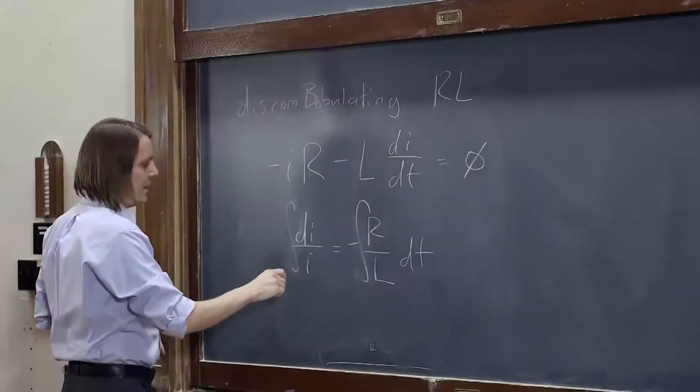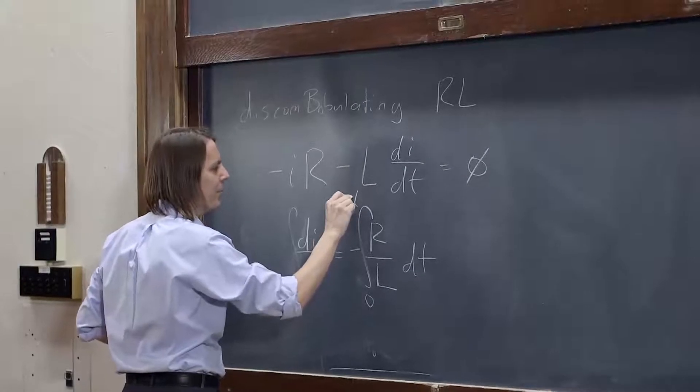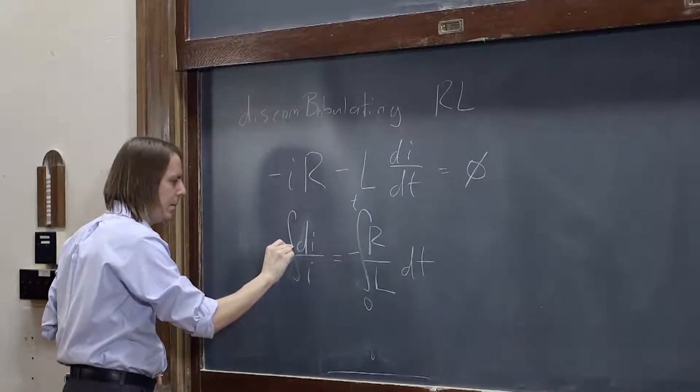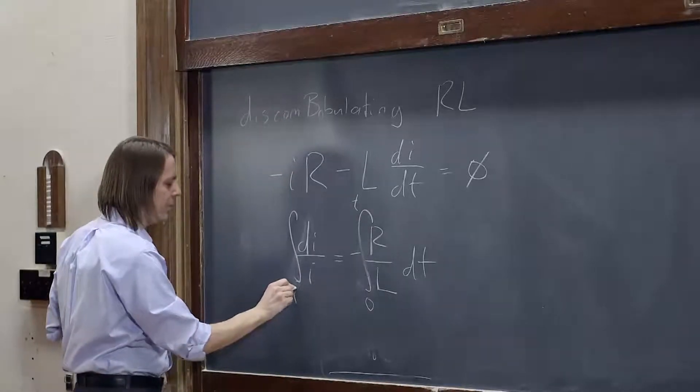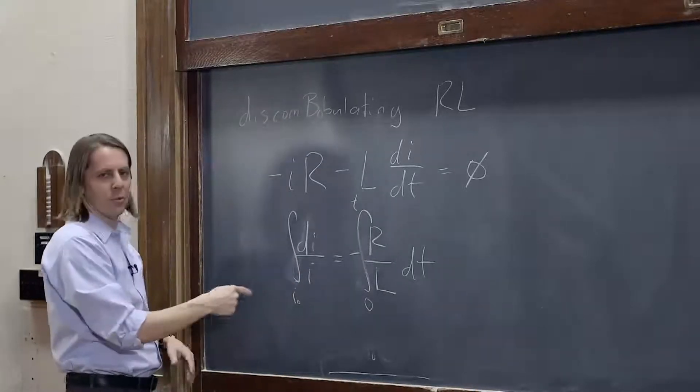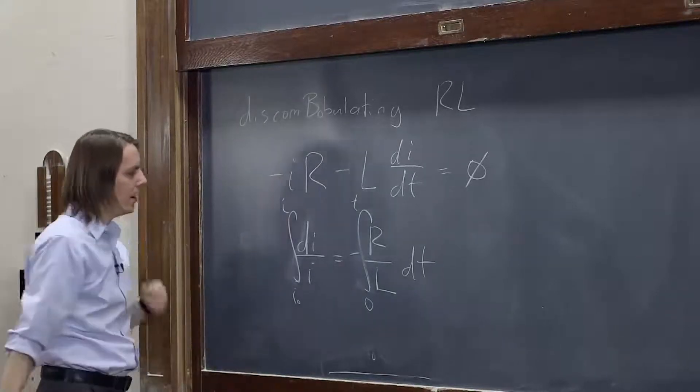So we would say at time zero, we flip the switch, and we want to know what's happening at some later time t. And at time t equals zero, we had i0, some initial current. And we just want to know what happens to that current. So it goes from i0 down to some current i, like that.